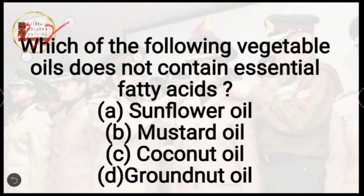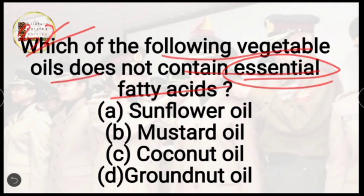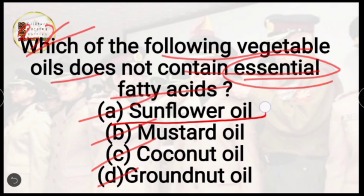Question number 32: which of the following vegetable oils does not contain essential fatty acids? Options are sunflower oil, mustard oil, coconut oil, or groundnut oil. The correct answer is option A, sunflower oil. Sunflower oil contains essential vitamins like vitamin E specifically, but essential fatty acids are not found in it.